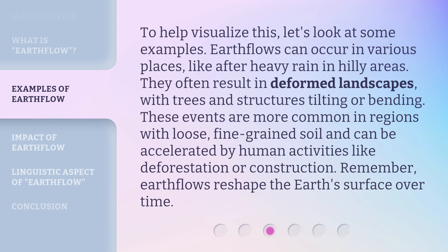To help visualize this, let's look at some examples. Earthflows can occur in various places, like after heavy rain in hilly areas. They often result in deformed landscapes, with trees and structures tilting or bending. These events are more common in regions with loose, fine-grained soil and can be accelerated by human activities like deforestation or construction. Remember, Earthflows reshape the Earth's surface over time.